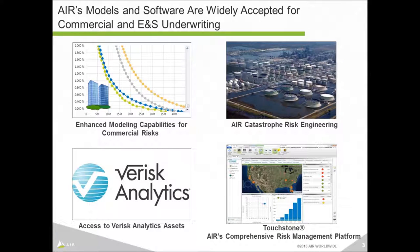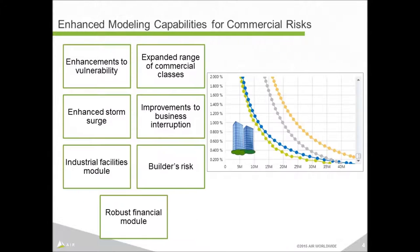Before we begin, let me highlight four key areas contributing to AIR's success in the commercial underwriting space. The first is enhanced modeling capabilities for commercial risks. We've made many enhancements on the modeling side, including vulnerability enhancements supporting a growing range of commercial risks. On the tropical cyclone side, with data from events such as Katrina, Ike, and Sandy, we've expanded commercial classes and substantially enhanced vulnerability to introduce greater differentiation between engineered and non-engineered structures.